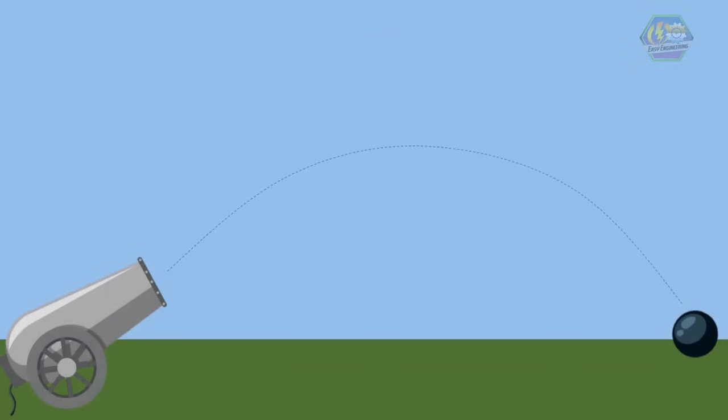First is its velocity. Initially, the cannonball has initial velocity. This initial velocity can be resolved into its x direction as vx and y direction as vy.